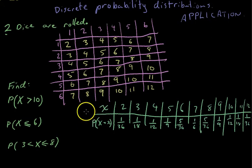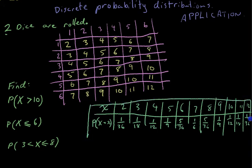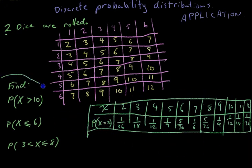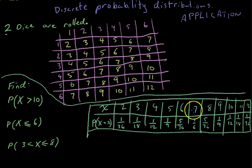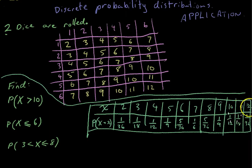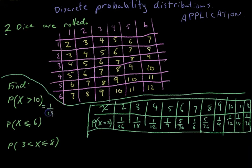Now we have our entire probability distribution. This bit's really quite easy, and in many questions you'll be able to skip the first bit entirely because the question will give you the probability distribution and you'll jump straight to solving it. So if we're finding the probability that x is greater than 10, that's the sum of P(11) and P(12). Something greater than 10 must be 11 or 12. The sum of those probabilities equals 1 in 18 plus 1 in 36, which ends up being 3 in 36, or 1 in 12.